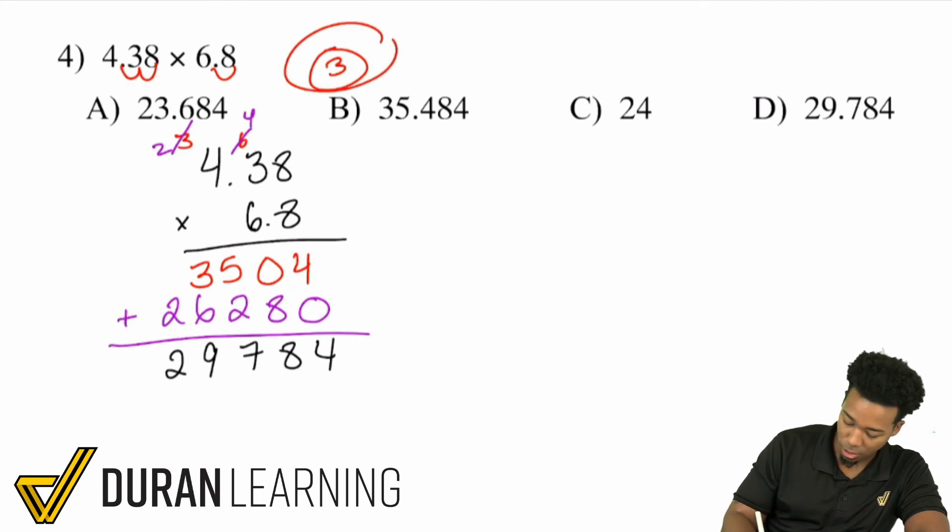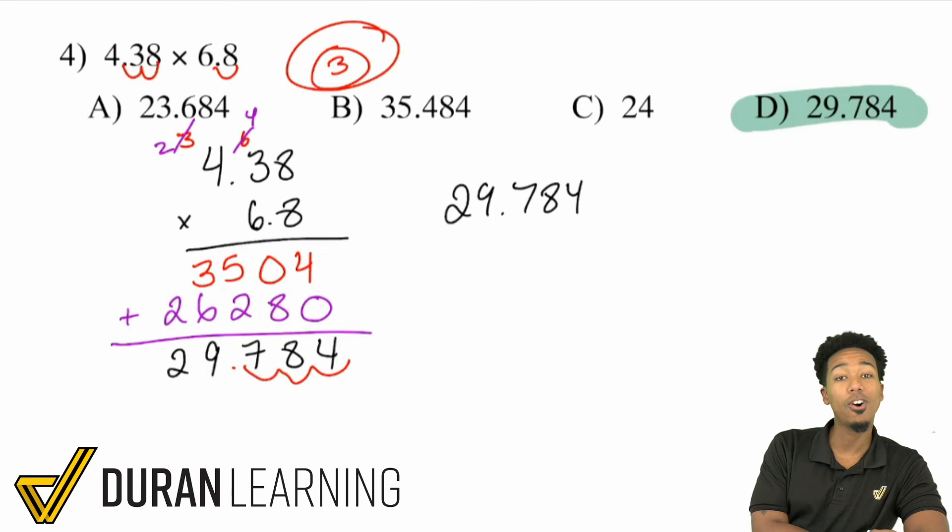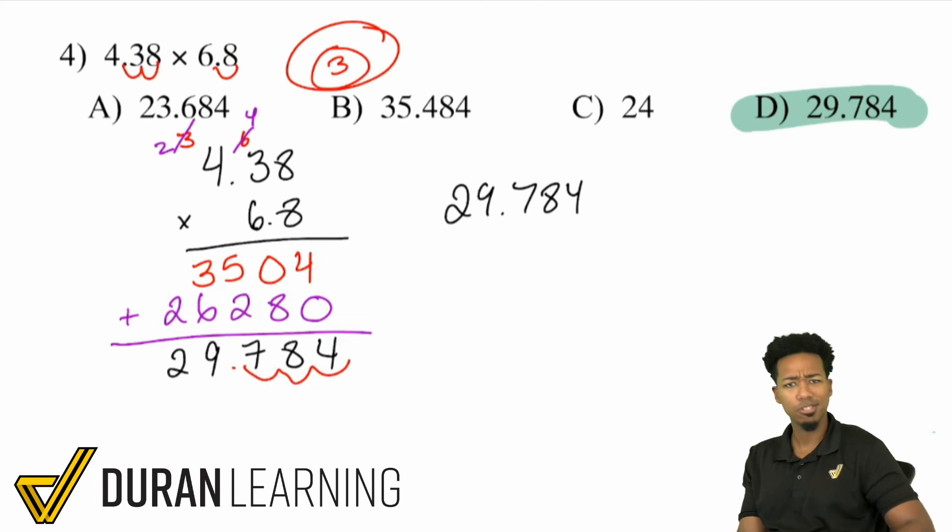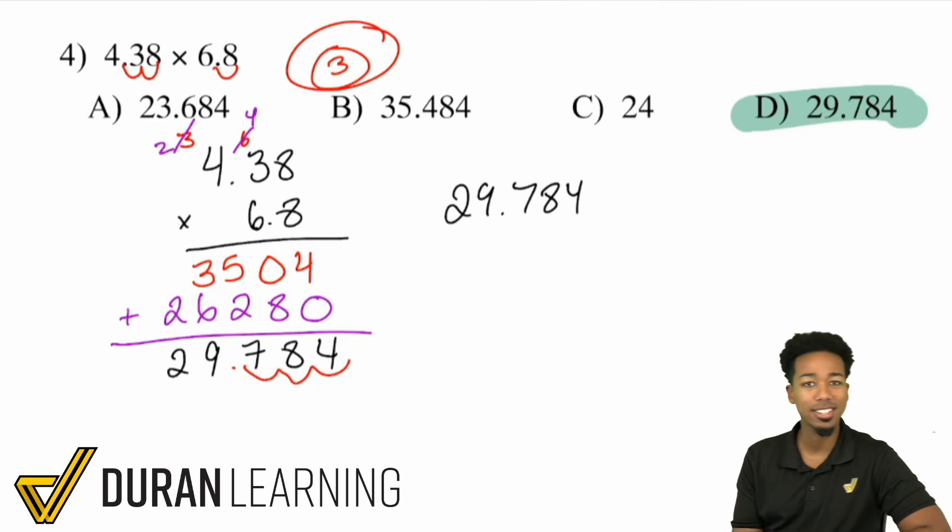And like we said, three decimal places, one, two, and three. So your final answer will be 29.784, and that is answer choice D. So again, I'm going to repeat it again and again. When you're multiplying decimals, just multiply the numbers, and then bring the total number of decimals back. That's it for multiplying decimals. Let's do one more and let's call it a day.